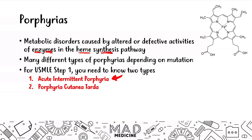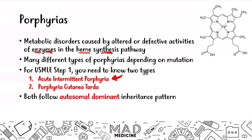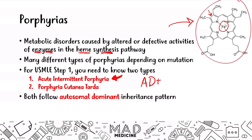In the next lecture we're going to be discussing porphyria cutanea tarda. Both acute intermittent porphyria and porphyria cutanea tarda follow autosomal dominant inheritance. By the way, this is a molecule of heme — this chemical structure is the protoporphyrin we talked about previously, and this is the iron molecule. When you combine protoporphyrin with iron you get heme as your end product.